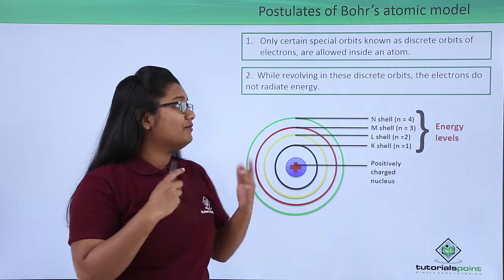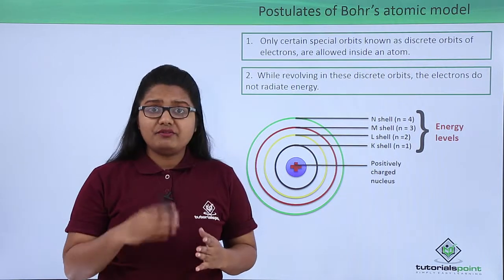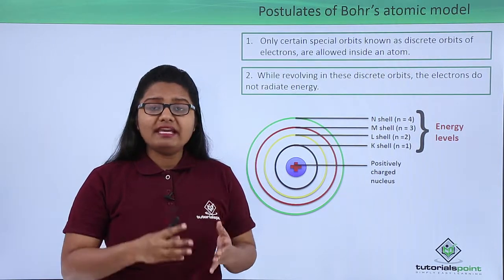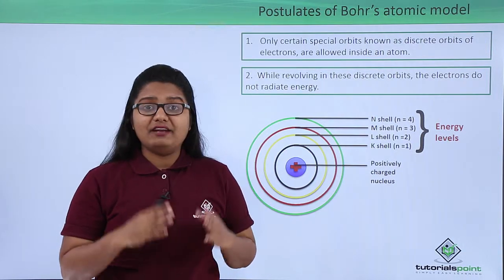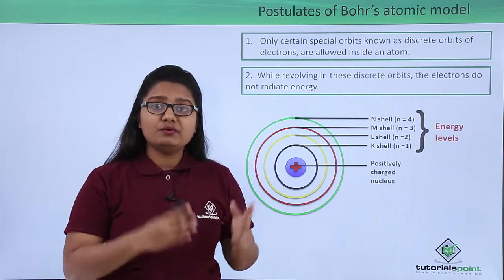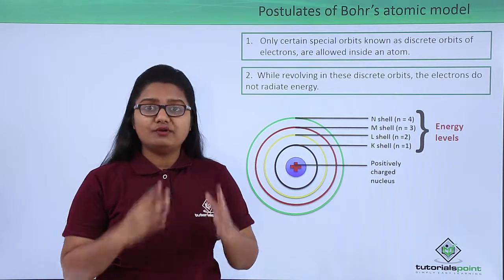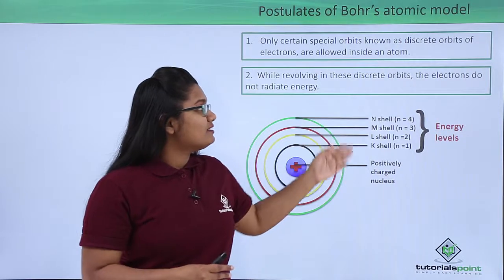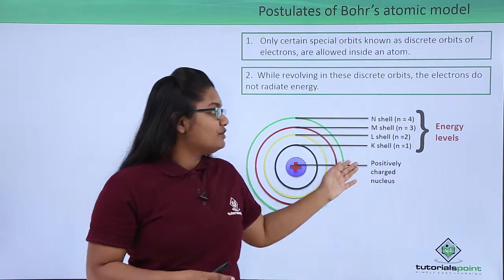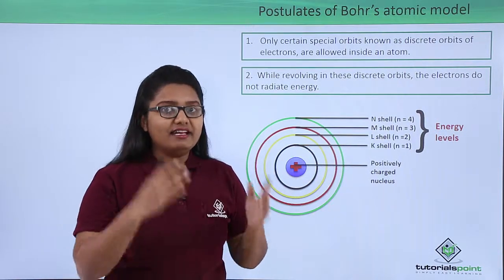So in this video we have learned that electrons revolve around the nucleus only at certain special orbits called discrete orbits, and whenever they revolve around the nucleus in those orbits they do not radiate energy. And those electrons are grouped into shells which represent energy levels.